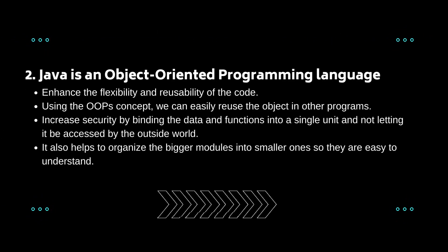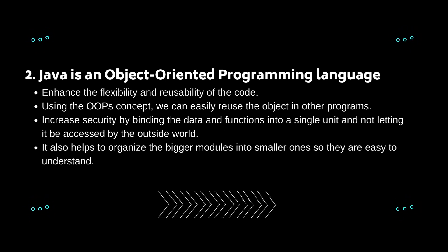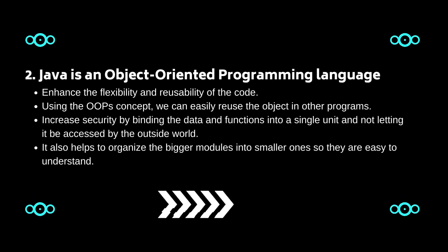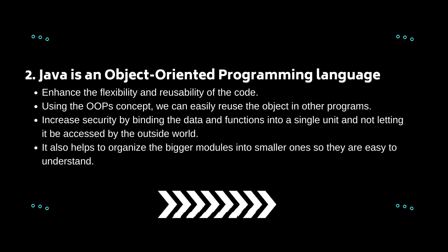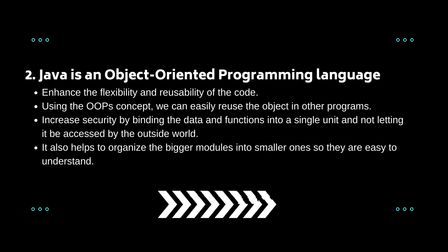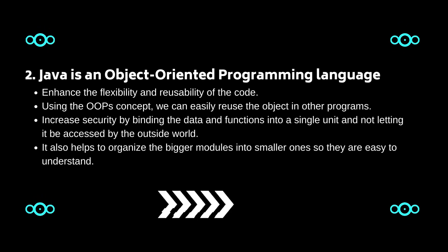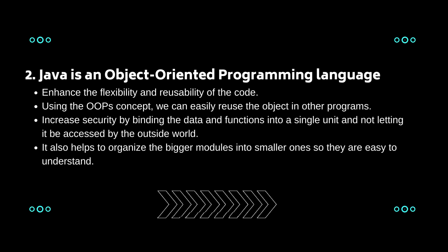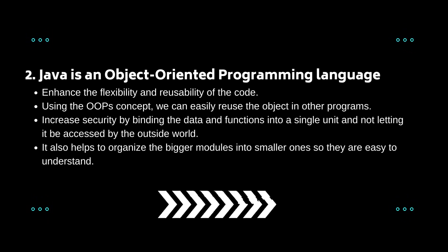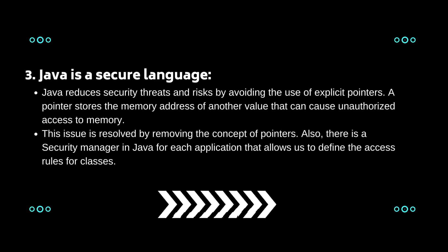Two: Java is an object-oriented programming language. Java is an object-oriented language that helps us enhance the flexibility and reusability of code. Using OOP concepts, we can easily reuse objects in other programs. It also helps increase security by binding data and functions into a single unit, preventing outside access. It also helps organize bigger modules into smaller ones so they are easy to understand.